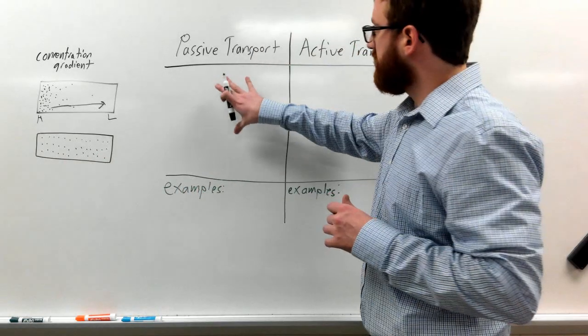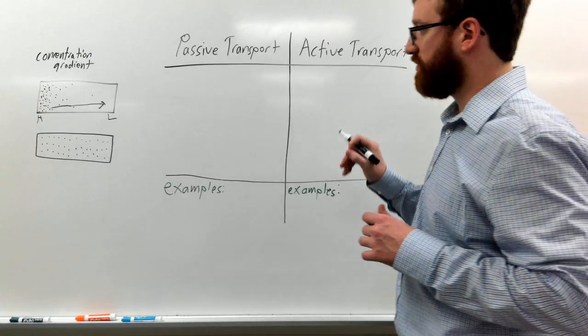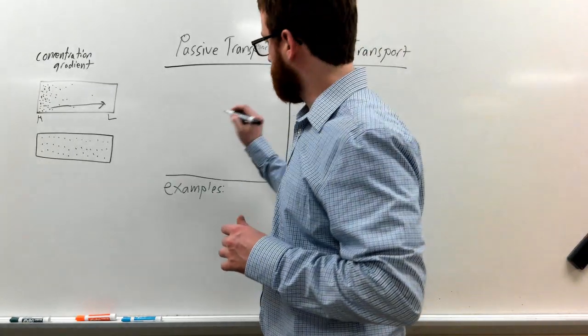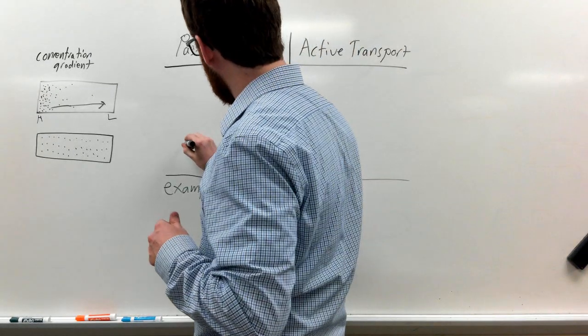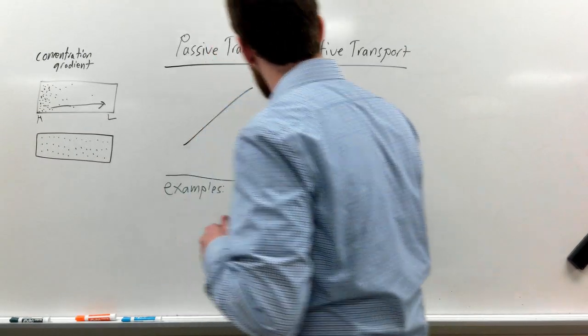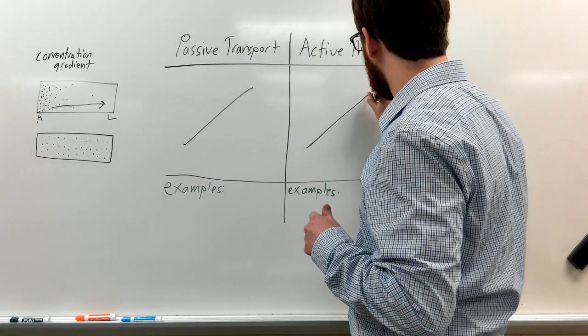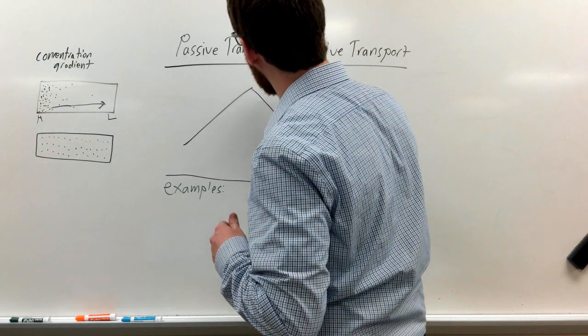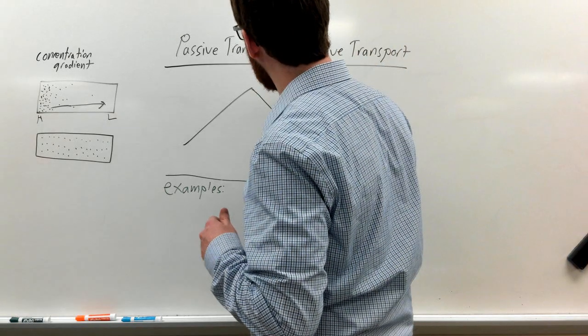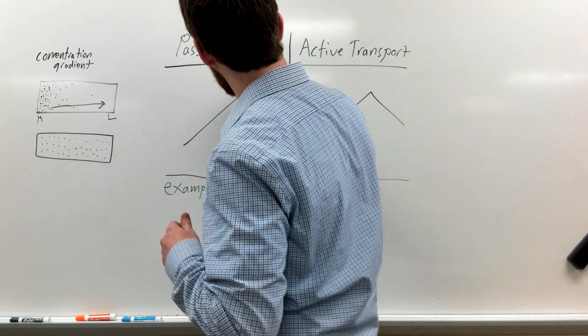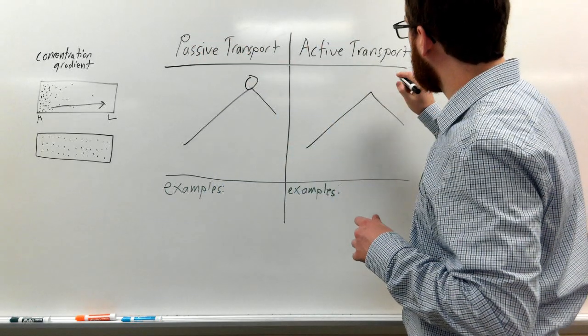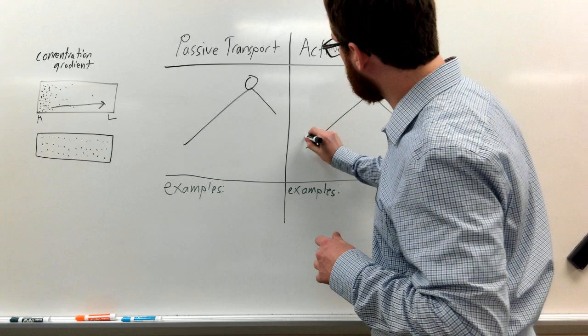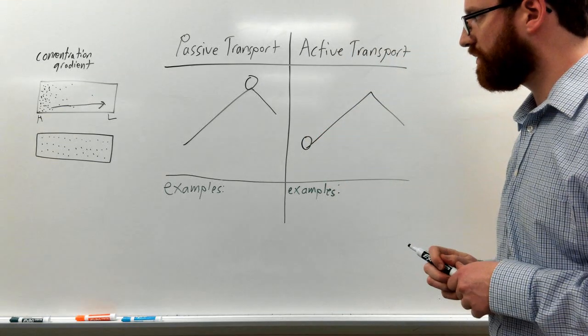So let's discuss the differences between passive and active transport. And I want to use this analogy. So if you have a hill, let's say you have a hill, and on top of this hill, you have a boulder. So here you have a boulder. And for active transport, at the bottom of the hill, you have a boulder.